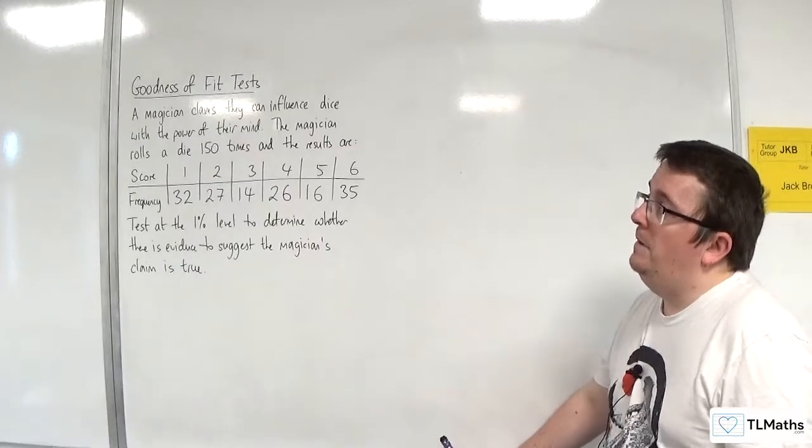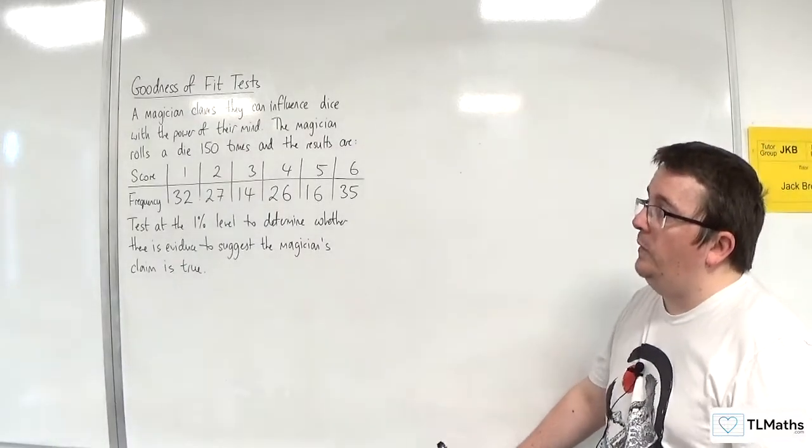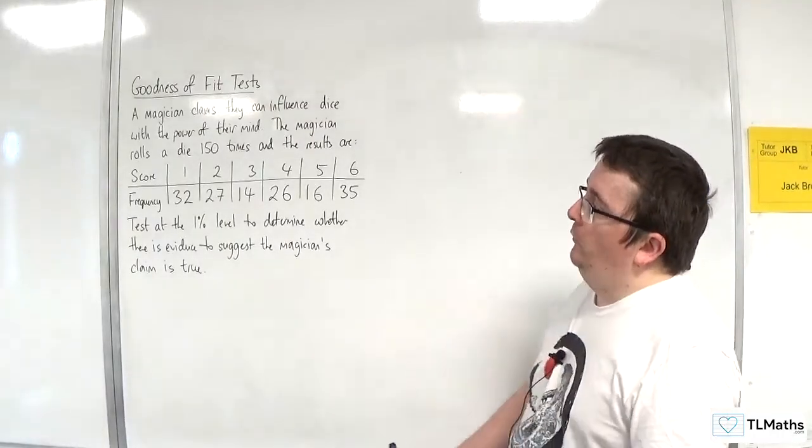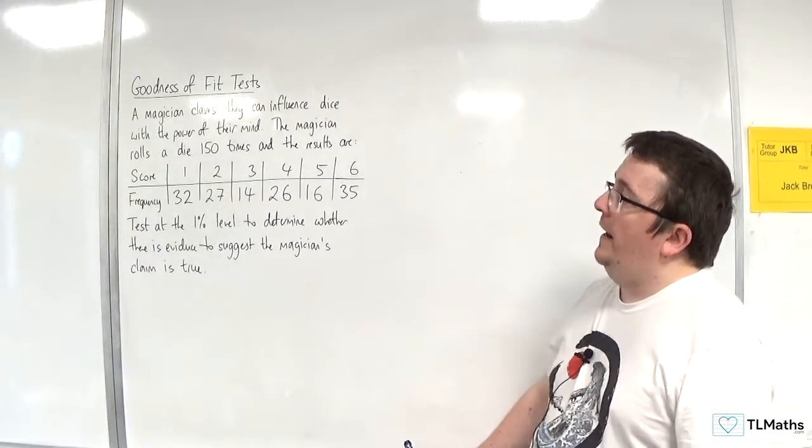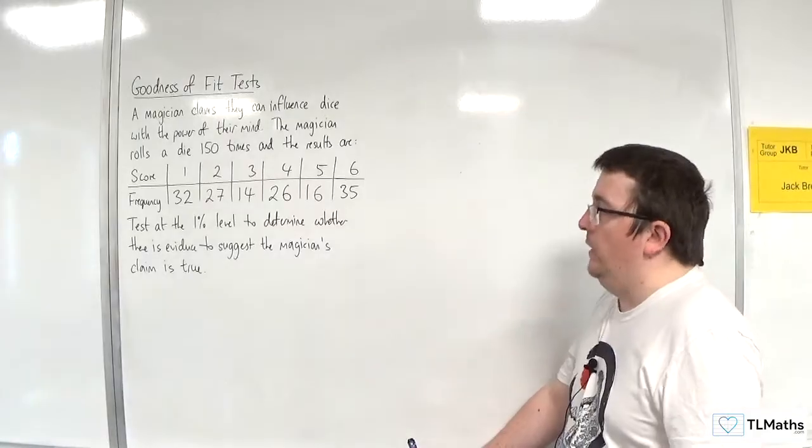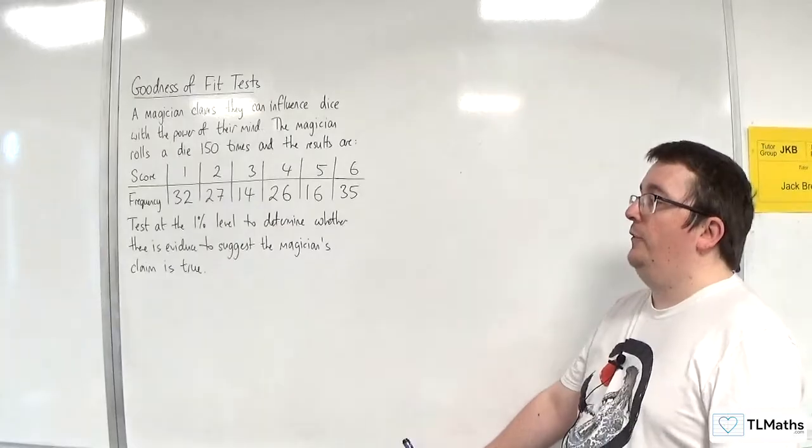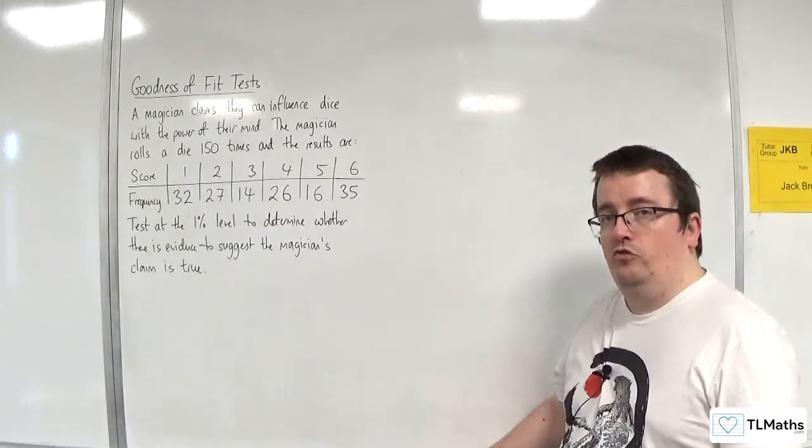So in this video, we've got a magician who claims they can influence dice with the power of their mind. The magician rolls a die 150 times, and the results are as follows. Test at the 1% level to determine whether there is evidence to suggest the magician's claim is true.